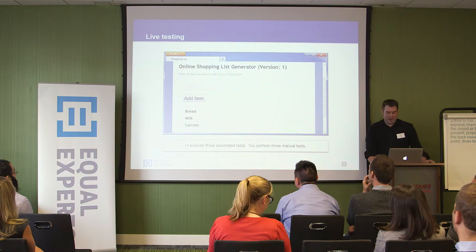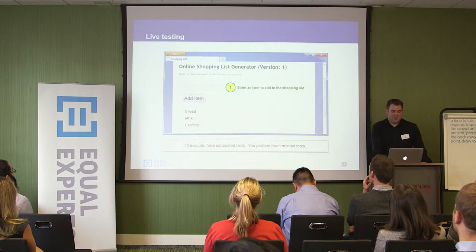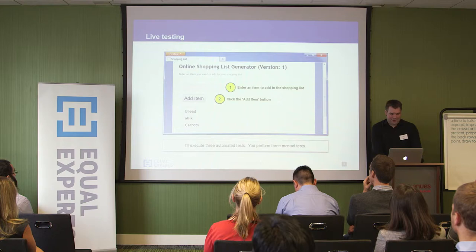I've built a really quite simple, elementary thing to test: an online shopping list generator. How it simply works is someone comes along, enters an item they want to add to their shopping list at the top, clicks the button in the middle, and then their item gets added to the bottom. I've already prepared in advance three automated tests that I'm going to run over three hypothetical release or build cycles. After I've run each test, I'll give you all the opportunity to perform some manual testing.